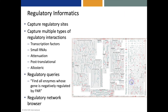The regulatory informatics capabilities of Pathway Tools include capturing both regulatory sites and multiple types of regulatory interactions. There are regulatory queries, such as finding all the enzymes whose gene is negatively regulated by FNR. The results of that query are highlighted on the metabolic network diagram for E. coli. There's also a regulatory network browser.